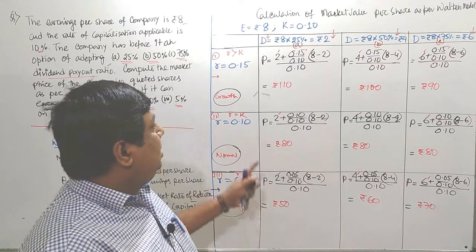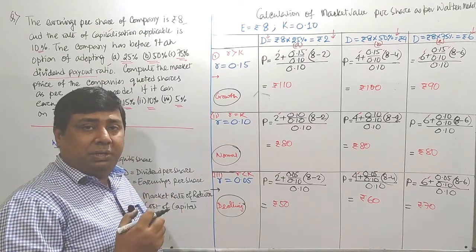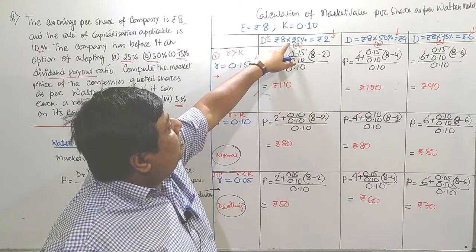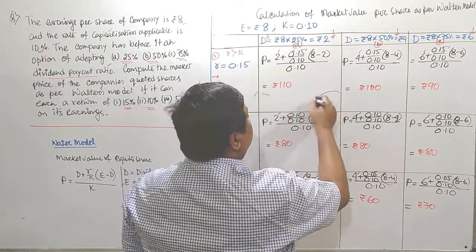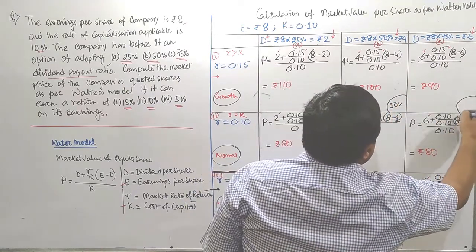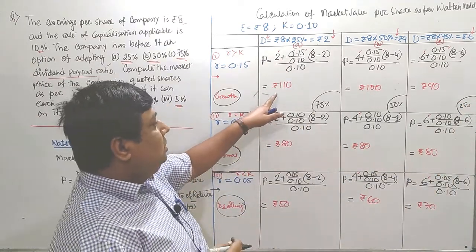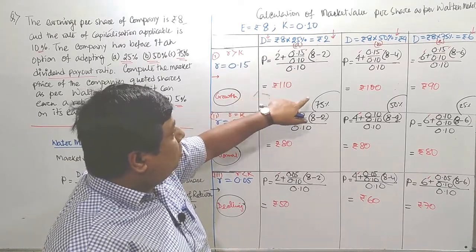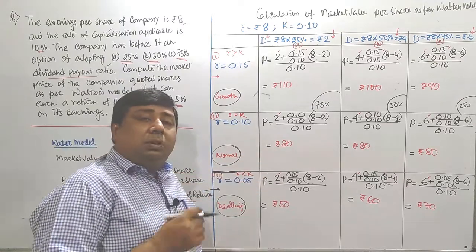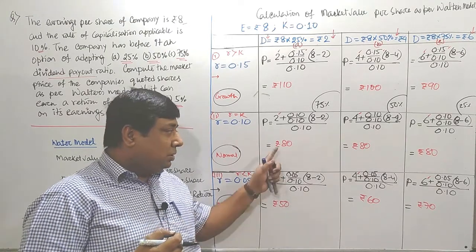The logic of Walter's model is if it is a growth firm, the company should retain dividend or pay lesser amount of dividend. In that case, the market value should rise. At first case, the company paid 25% dividend, retained 75%. At second option, the company retained 50%. At third option, the company retained 25%. Since the company retained more in the growth phase, the market value of the firm is also more.